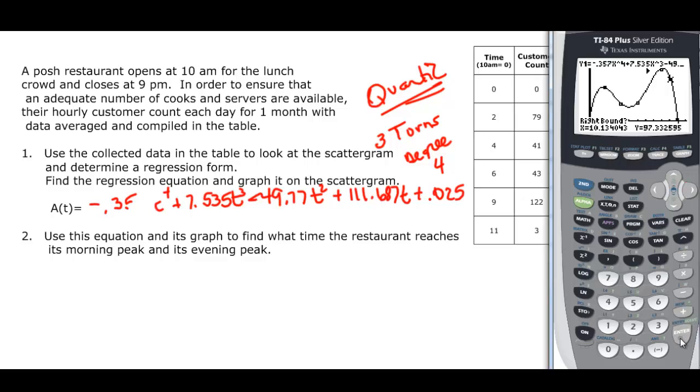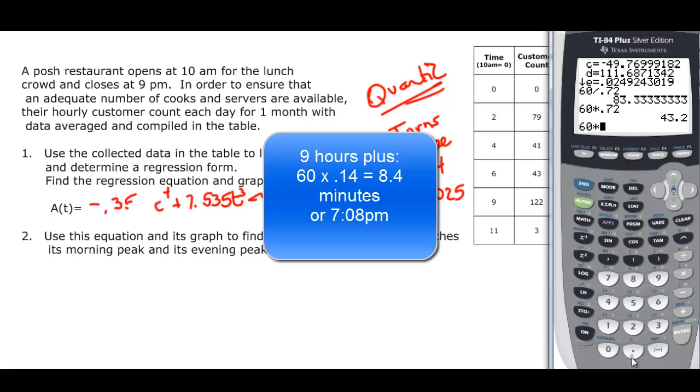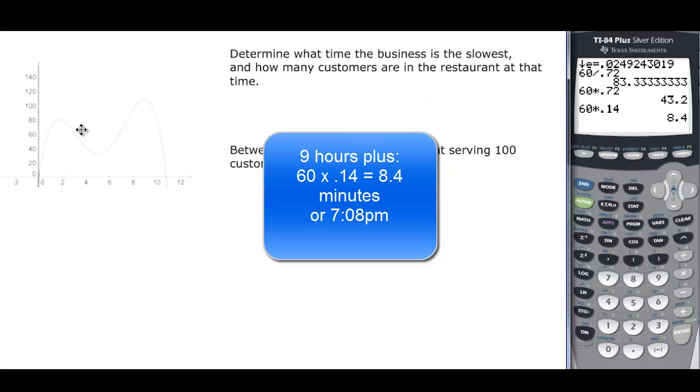If we go do the other one, second trace four, and we find out that this one is 9.14. 60 times 0.14 is going to give us about 7:08 for the time.